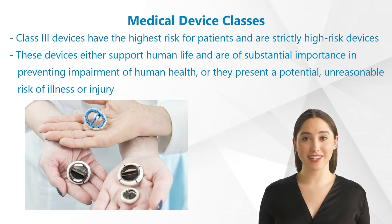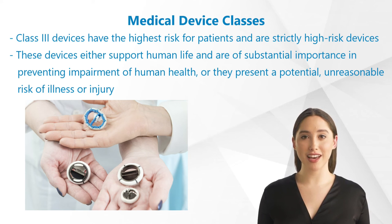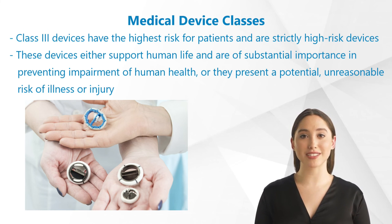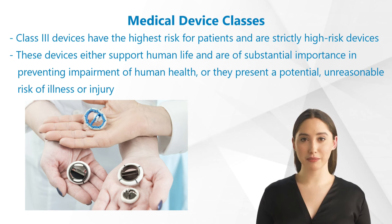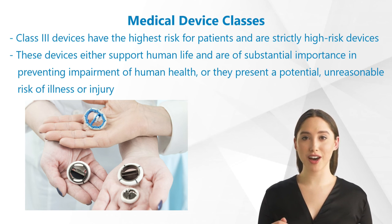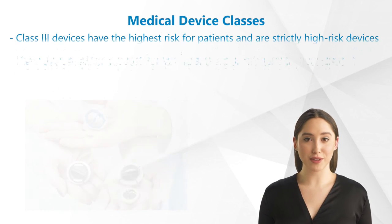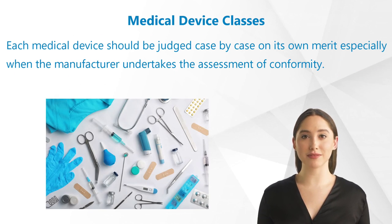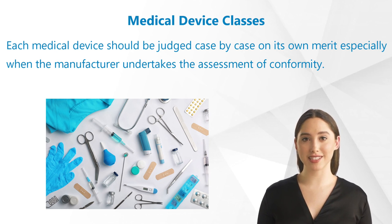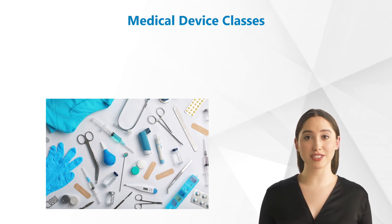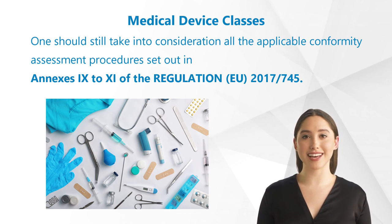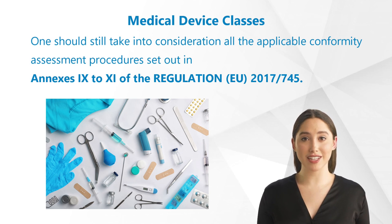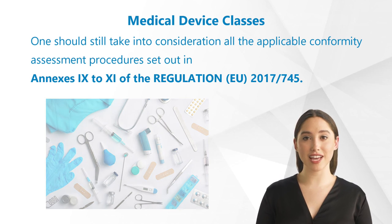Class 3 devices have the highest risk for patients and are strictly high-risk devices. These devices either support human life and are of substantial importance in preventing impairment of human health, or they present a potential unreasonable risk of illness or injury. Examples include balloon catheters, prosthetic heart valves, pacemakers, etc. Remember that each medical device should be judged case by case on its own merit, especially when the manufacturer undertakes the assessment of conformity. One should still take into consideration all applicable conformity assessment procedures set out in Annexes 9 to 11 of EU Regulation 2017/745.